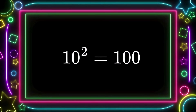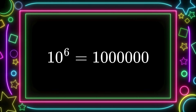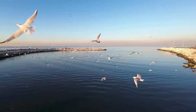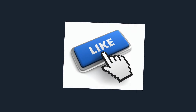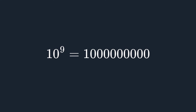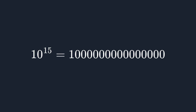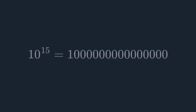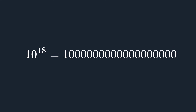Let's use 10. 10 to the second power takes us directly to 100. 10 to the third power is 1,000. But let's continue. 10 to the sixth power is already 1 million. Now we've reached something considerably large, right? 10 to the ninth power equals 1 billion. 10 to the twelfth power equals 1 trillion. 10 to the fifteenth power equals 1 quadrillion. 10 to the eighteenth power equals 1 quintillion.